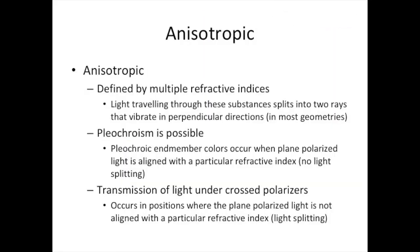To wrap up: anisotropic minerals are defined by multiple refractive indices. These different refractive indices cause light to split into two rays vibrating in perpendicular directions — unless you are looking down an optic axis. In plane polarized light, pleochroism is caused by the relative dominance of one ray over the other as we rotate the mineral. When plane polarized light aligns with a particular refractive index, we see a pleochroic end-member color, but no light is transmitted under cross-polarization. We see maximum light transmission under cross polarizers at orientations 45 degrees from the pleochroic end-member colors, where plane polarized light is evenly split between the two rays.